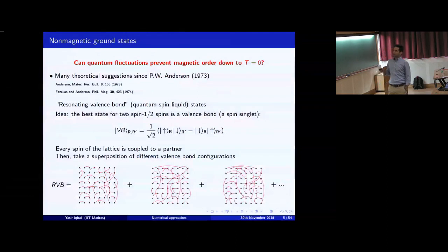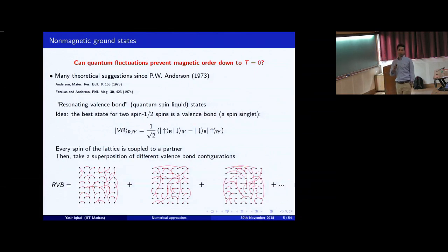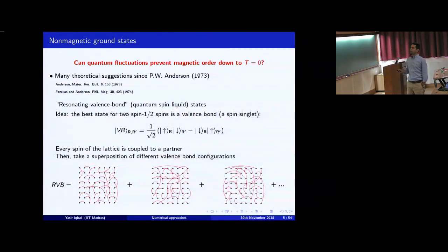The question is: can quantum fluctuations prevent long-range magnetic order? In my entire talk, when I refer to magnetic order, I'll be referring to dipolar magnetic order, and not quadrupolar or any higher pole. So when I say there is no magnetic order, I mean no long-range dipolar magnetic order.